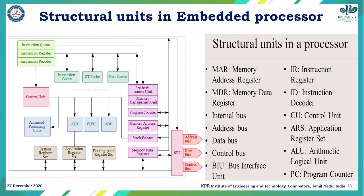It consists of an ALU, a floating point processing unit, and an atomic operation unit — these are the three execution units of an embedded processor. The ALU can do any kind of arithmetic and logical operations, while the floating point operating unit basically operates with floating point data.